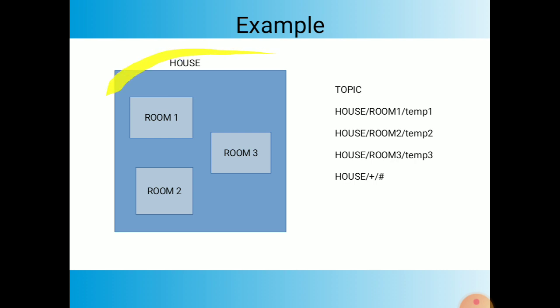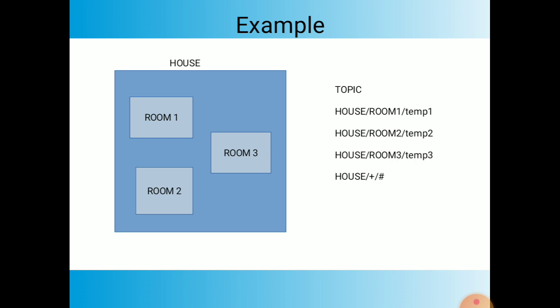Assume there is a house. In the house there are three rooms: room 1, room 2, and room 3. I want the data of room 1 sensor A — specifically the temperature sensor data from room 1. How do I write the topic path? It would be: house/room1/temp1. In the house there is room 1, and in room 1 there is temperature data.